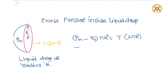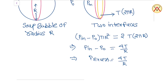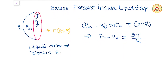So we can say Pn minus P0 equals 2T by r. In case of a liquid drop there is only one interface, so the excess pressure is 2T by r. In summary: for two interfaces and a spherical surface, the excess pressure is 4T by r, and for a single interface the excess pressure is 2T by r.